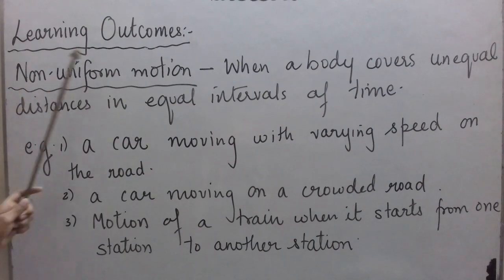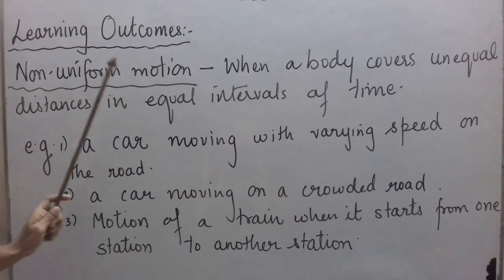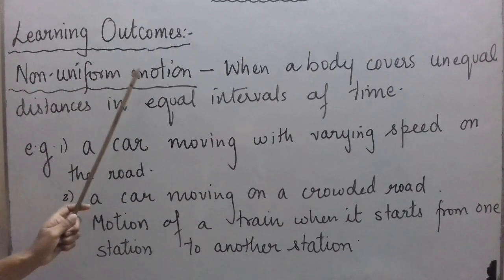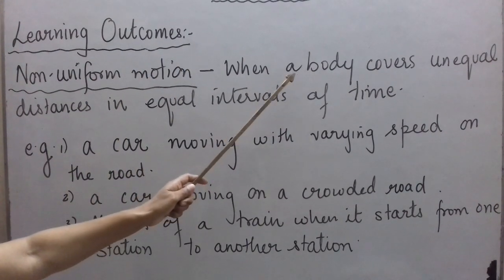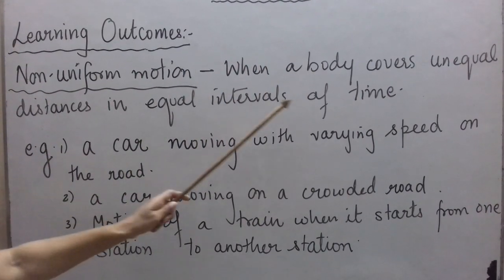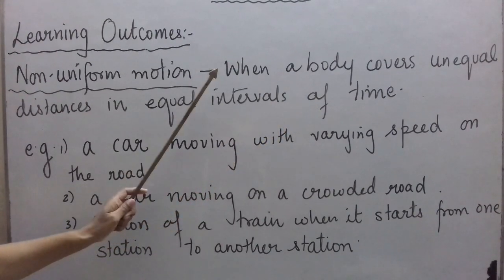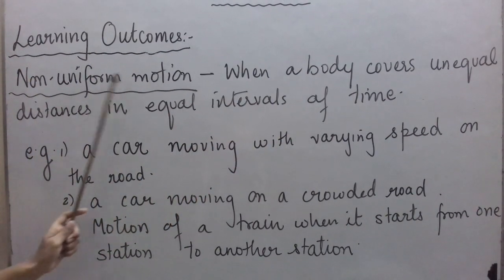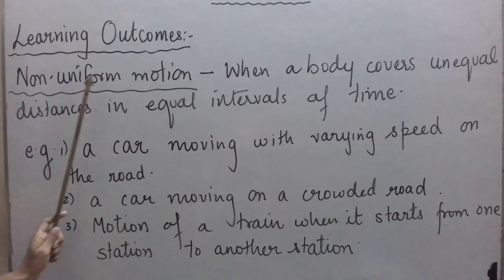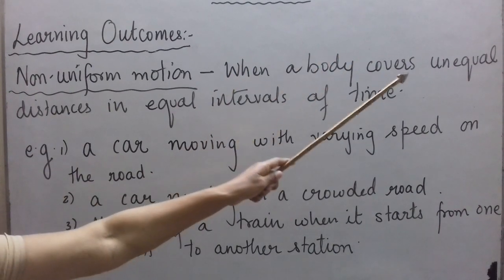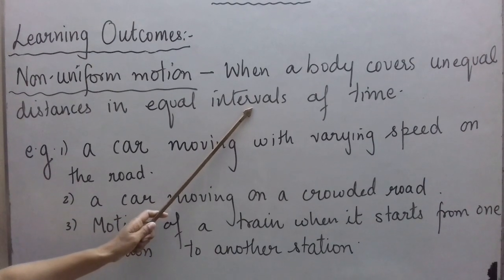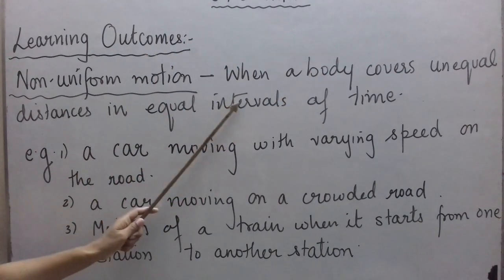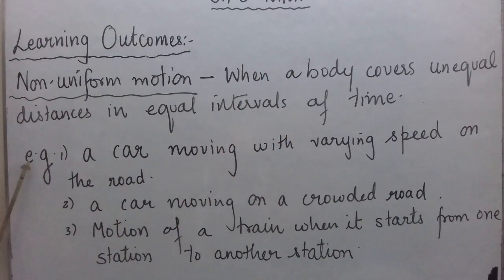Now let us define non-uniform motion. As the name suggests, it is the opposite of uniform motion. Non-uniform motion is when a body covers unequal distances in equal intervals of time. You can also write it as when a body covers equal distances in unequal intervals of time. Both definitions are acceptable.